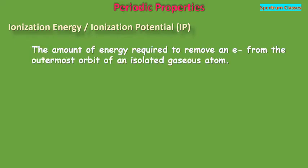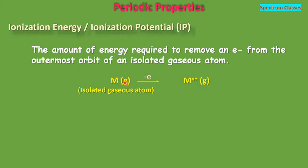Ionization energy is defined as the amount of energy required to remove an electron from the outermost orbit of an isolated gaseous atom. If we say the amount of work done instead of energy required to remove an electron from the outermost orbit of an isolated gaseous atom, then that is termed as ionization potential. This can be represented by an equation where M is the metal atom in gaseous isolated state; when an electron is removed from its outermost orbit to convert it into a positively charged metal ion, the energy required is its ionization energy.